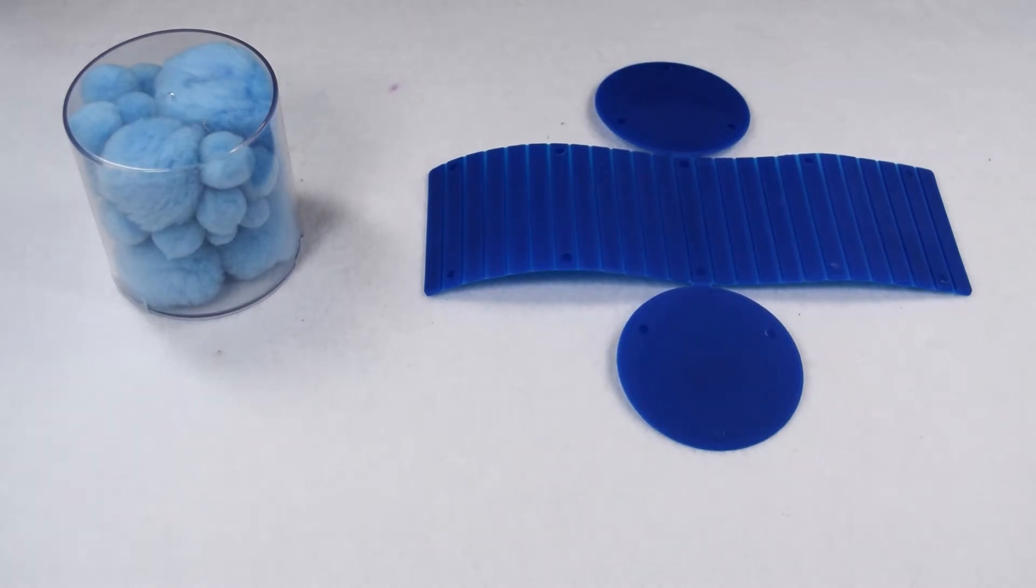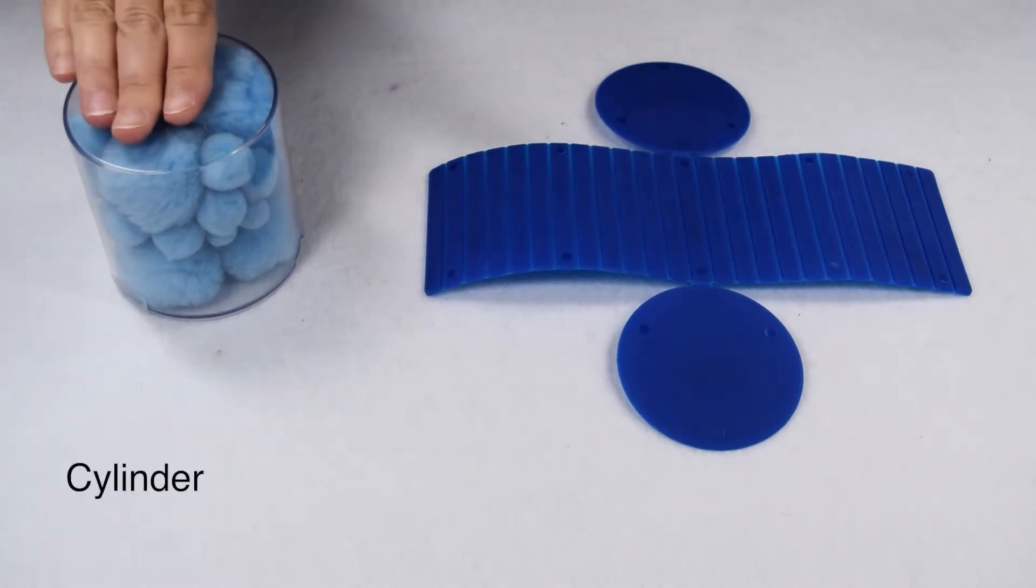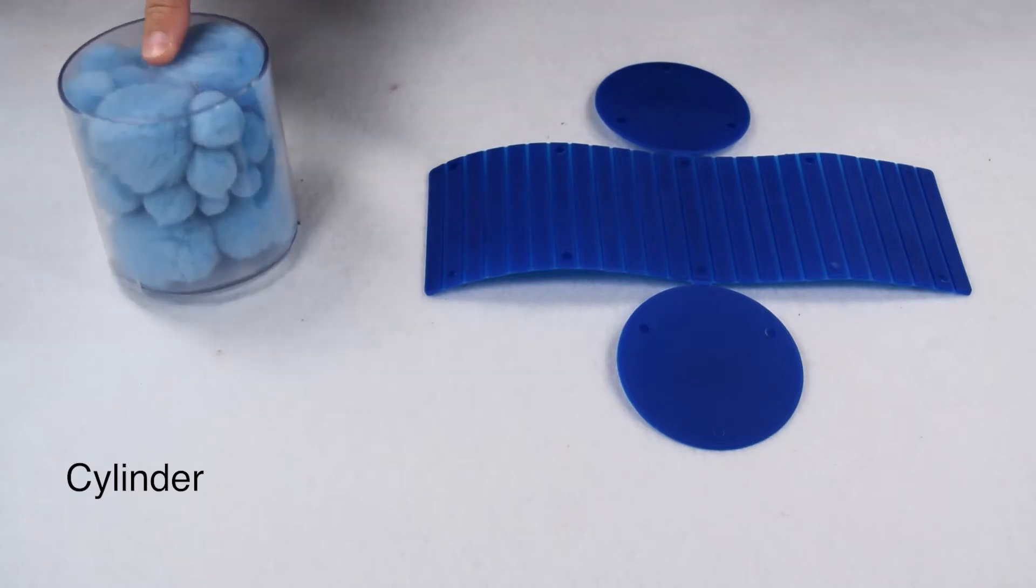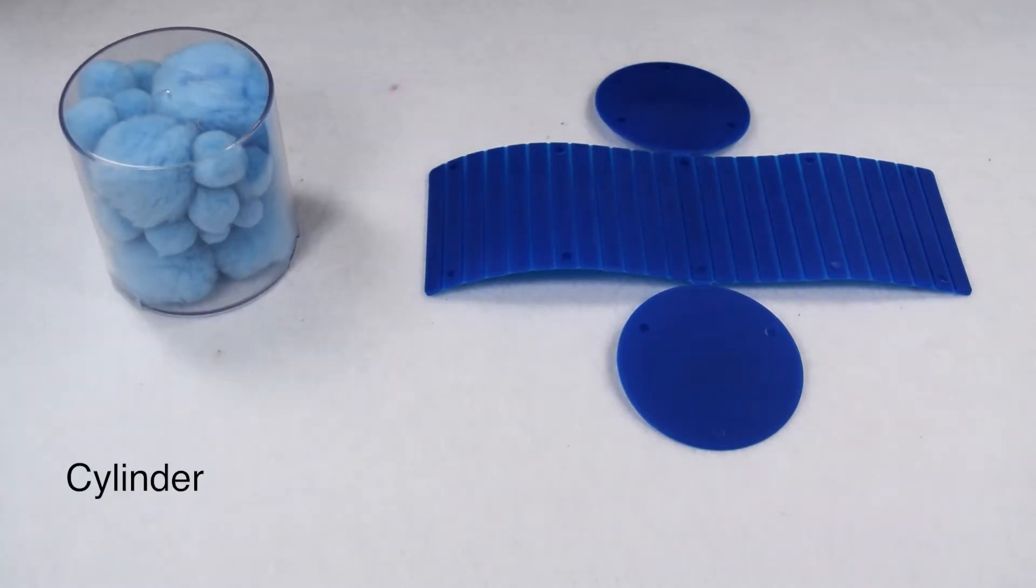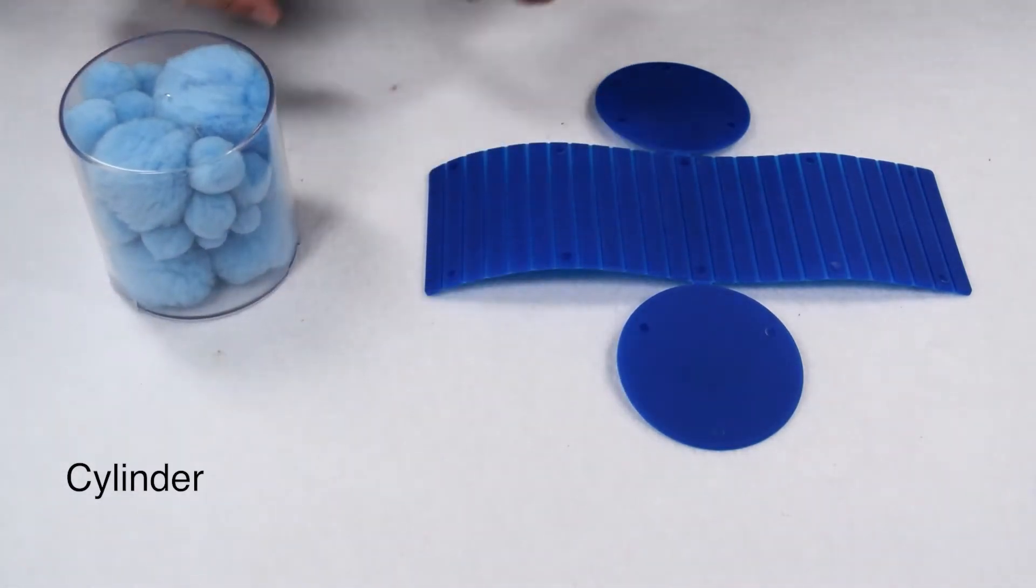One 3D figure that is not a polyhedron is a cylinder. A cylinder is a solid figure. It has two congruent and parallel circular bases, and it has one curved lateral face.